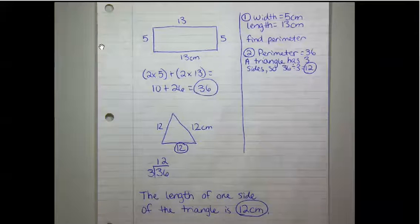Here are my notes. The wire is first bent into a rectangle with a width of 5 and a length of 13, so we have 5 here and 5 here, 13 here and 13 here.